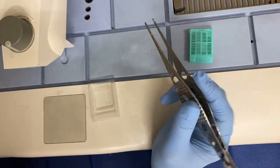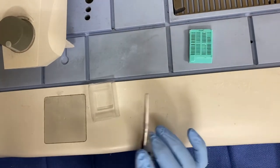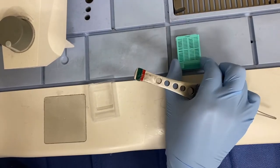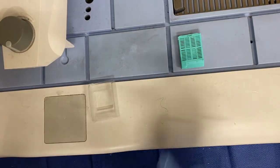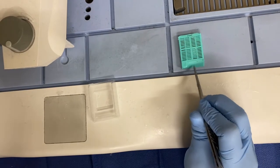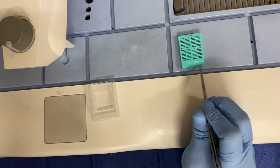We're going to walk you through the steps of embedding. We're going to start with just one single cassette at a time—that's really important to help with any mix-up. We want to make sure that we verify our patient information, which is printed here with our case number.